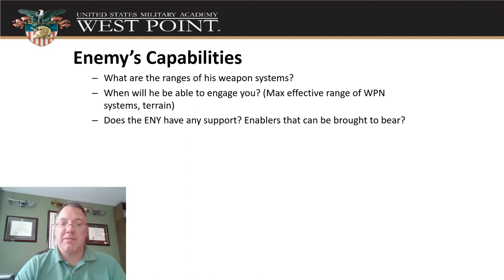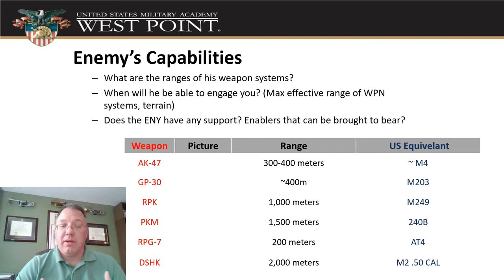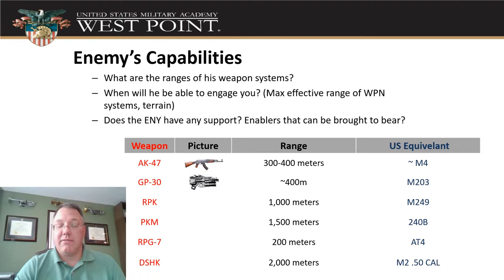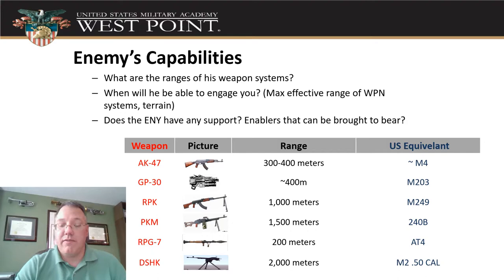When looking at enemy weapon system capabilities, we need to know the ranges — when can they engage us, when can't they — and what support enablers they have. Here's a reference table for small arms: the AK-47 basic rifle, the GP-30 grenade launcher similar to our M203, the RPK light machine gun similar to our squad automatic weapon, the PKM medium machine gun in 7.62 similar to our M240B, the RPG-7 anti-tank rocket launcher, and the DShK heavy machine gun equivalent to our .50 cal M2.